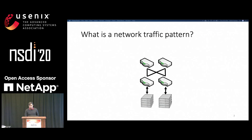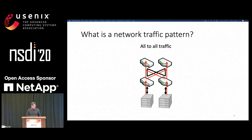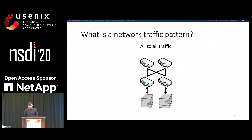So what is a traffic pattern? One example is all-to-all traffic where a set of applications create a uniform utilization all over the network. In this example, we have a small leaf-spine topology with four switches and two racks of servers. In an all-to-all traffic pattern, the servers might send traffic up to the leaves, which would then spread the traffic evenly over the spines, and then the pattern of utilization would continue until all the flows stop at approximately the same time. A pattern like this might suggest the importance of bisection bandwidth.